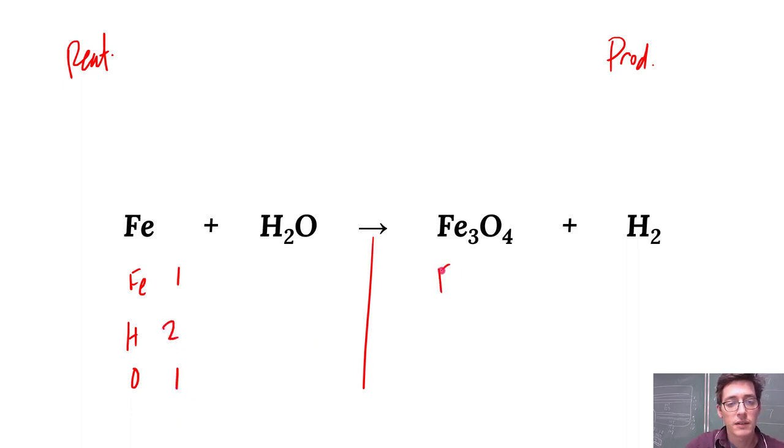On the right side, still have iron, hydrogen, and oxygen. This time I've got three irons, I've got two hydrogens and four oxygens.